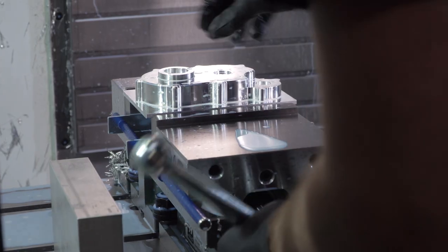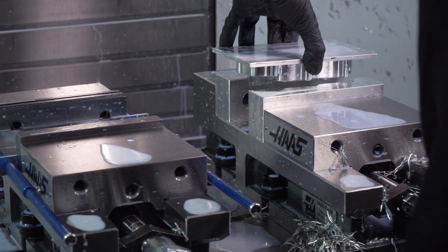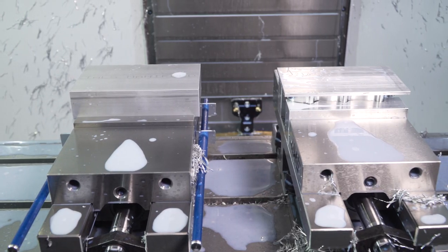Once Op 1 is done, I can take that part out and put it into the Op 2 vices and load a fresh piece of stock. Here's where the one piece flow begins.